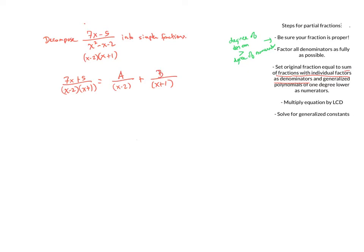Now I'm going to multiply both sides of this equation by the least common denominator, x minus 2 times x plus 1. On the left-hand side, the entire denominator goes away. On the right-hand side, the x minus 2s cancel leaving A times x plus 1, and the x plus 1s cancel leaving B times x minus 2. There are a couple of ways to solve for the generalized constants — I'll show the quick way first and the more proper way later.